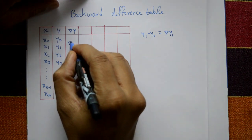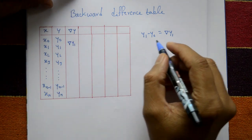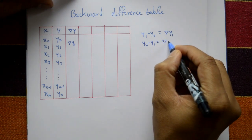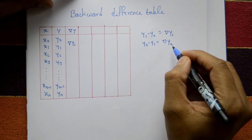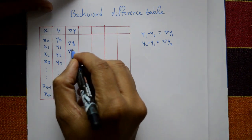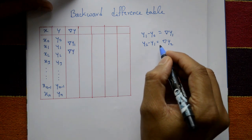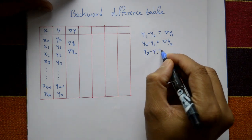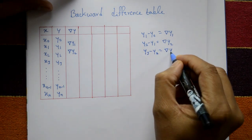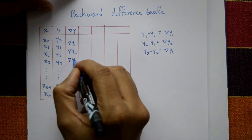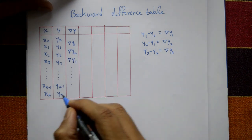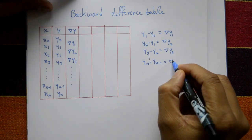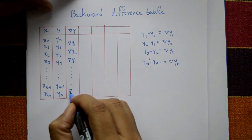The first backward difference y1. Next, y2 minus y1 is the first backward difference y2. Then y3 minus y2 is equal to the first backward difference y3, and so on. Finally, yn minus yn-1 is equal to the first backward difference yn.